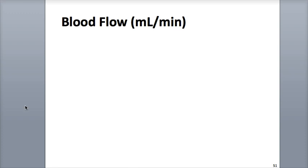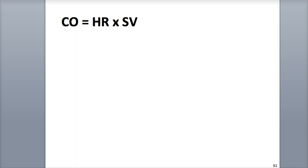The amount of blood flowing through any tissue over a certain period of time is called blood flow. It is measured in units of milliliters per minute. The difference between blood flow and cardiac output is that cardiac output is the total volume of blood flow traveling through the systemic or pulmonary circulation every minute. Remember that cardiac output is equal to the heart rate multiplied by the stroke volume.